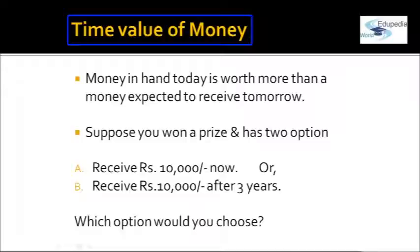Apart from opportunity cost, other factors include inflation. Also, a promise to pay you back after three years is just a mere promise — there is a risk that the amount might not be paid, which is called default risk. And when you're getting the money today, there is a natural impatience when someone promises to pay it back after three years. So the money in hand today has more worth than money expected to be received in the future, and money's value reduces over time.